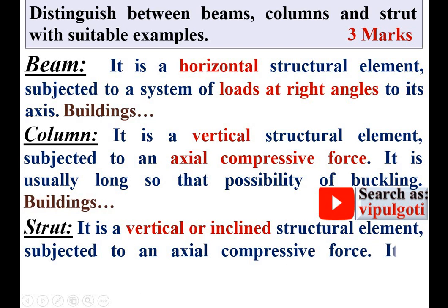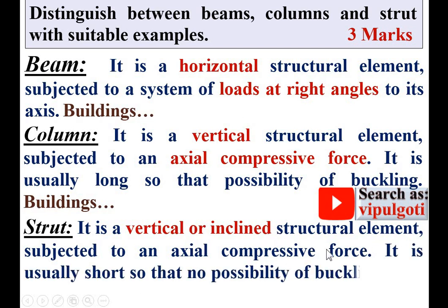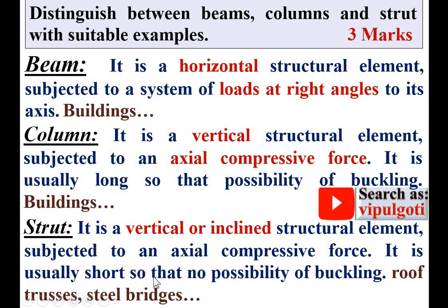Strut: it is a vertical or inclined structural element subjected to an axial compressive force. It is usually short, so there is no possibility of buckling. Generally, it is used in rope trusses and steel bridges. In general, beam and column both are known as strut — strut is the common word. If the strut is in a horizontal position, it is called a beam; if it is in a vertical position, it is called a column.